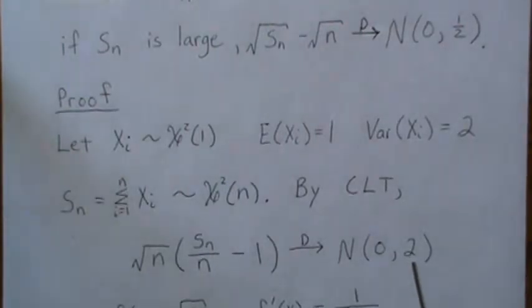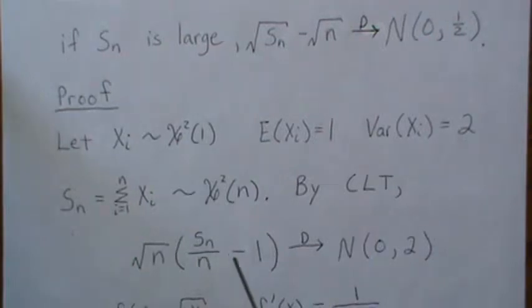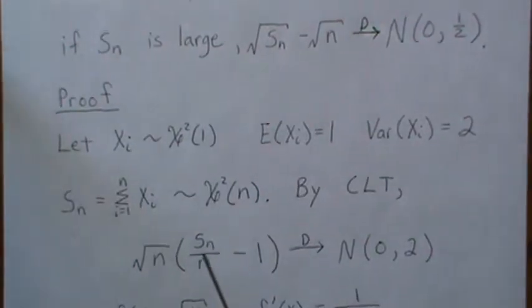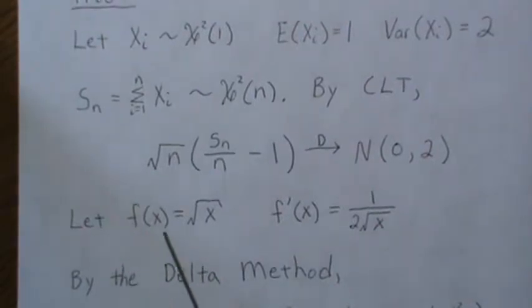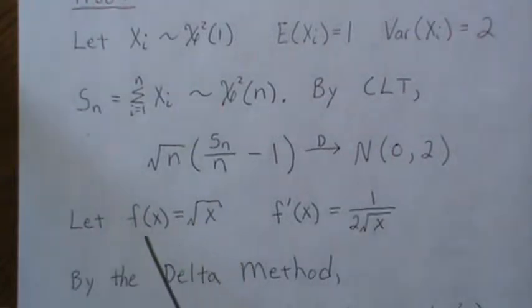Now because this approaches normality, we can use the Delta method. Let f(X) equal the square root of X. The Delta method gives us tools to find the limiting distribution of this function. The first derivative of this function is 1 over 2 radical X.